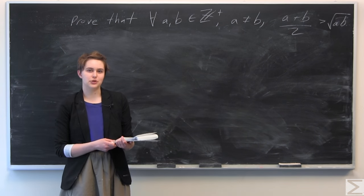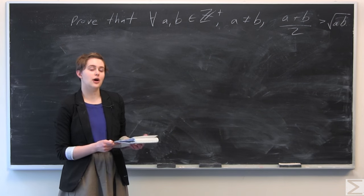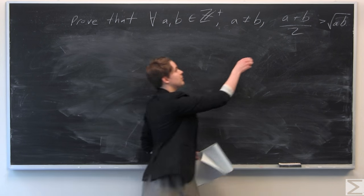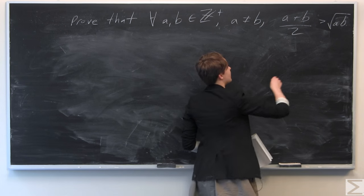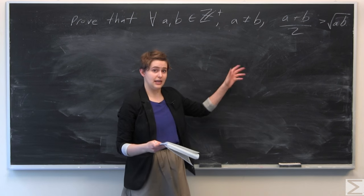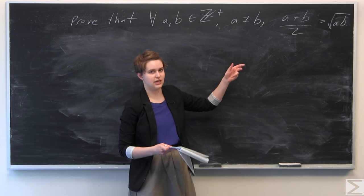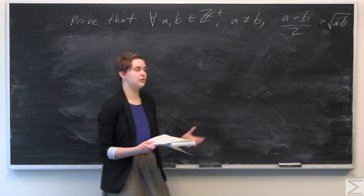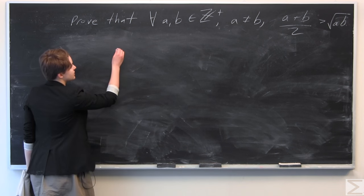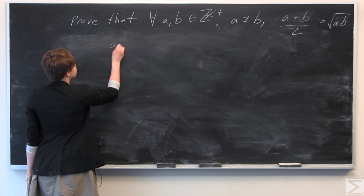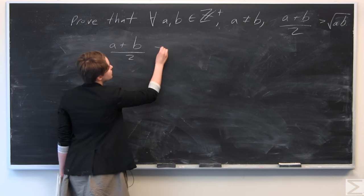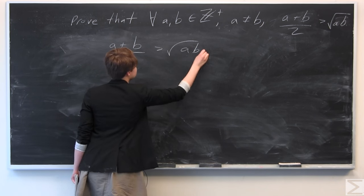The way we're going to approach this proof is using backward reasoning. We're going to work from our conclusion back to something we can start from at the beginning, so we can reverse our steps at the end. We'll start with the statement we're trying to prove: a plus b over 2 is greater than the square root of ab.